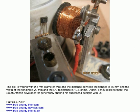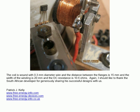That coil anyway is wound with 0.3mm solid copper wire which is covered with enamel paint for insulation. The distance between the flanges is 15mm and the width of the winding is 20mm and the DC resistance of the entire coil is 10.6 ohms. Again, I should like to thank the South African developer for so generously sharing his successful designs with us.